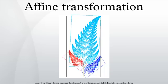In geometry, an affine transformation, affine map, or an affinity is a function between affine spaces which preserves points, straight lines, and planes. Also, sets of parallel lines remain parallel after an affine transformation.